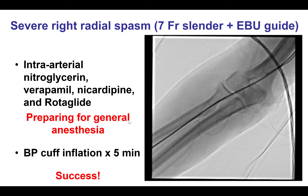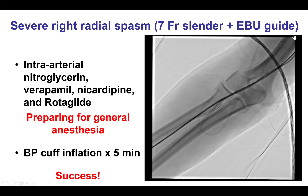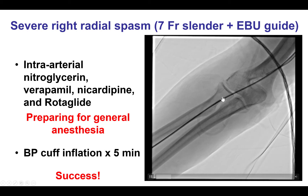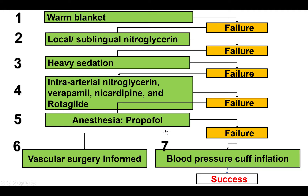Once again, we gave nitroglycerin, verapamil, nicardipine, and rotaglide, and we even prepared for starting general anesthesia. But as a last resort, we inflated the blood pressure cuff for 5 minutes, and after that, it caused enough post-ischemic dilation that we were then able, with difficulty, to remove the radial guide catheter. Here is an overview of the various steps: warm blankets, local sublingual nitroglycerin, heavy sedation, intra-arterial vasodilators, propofol, and then the blood pressure cuff inflation that finally led to success.